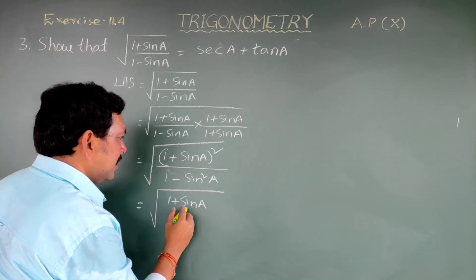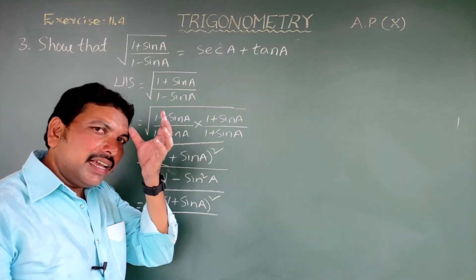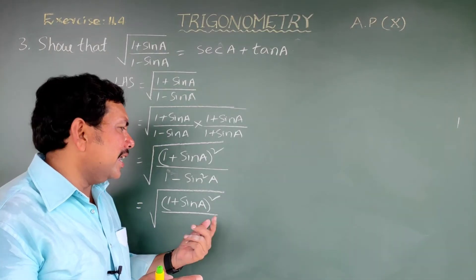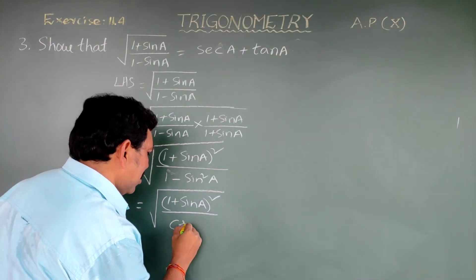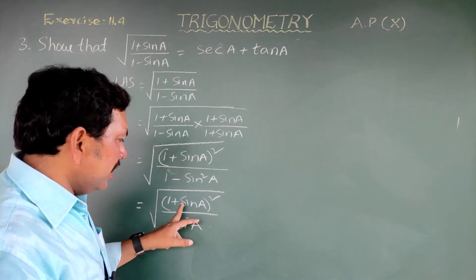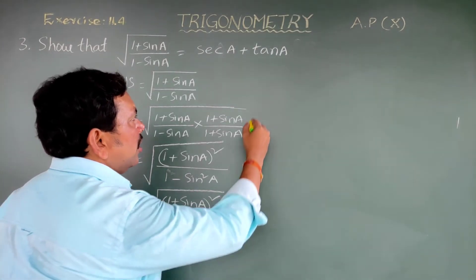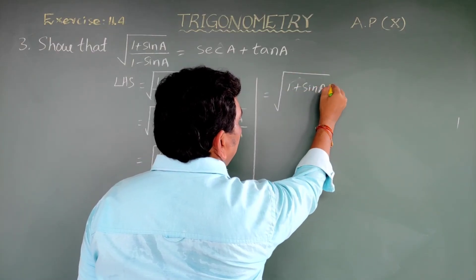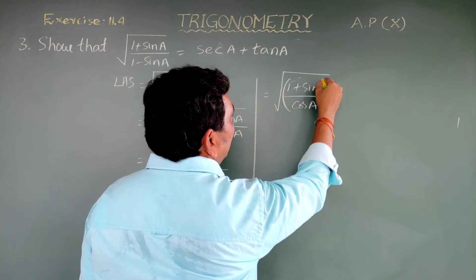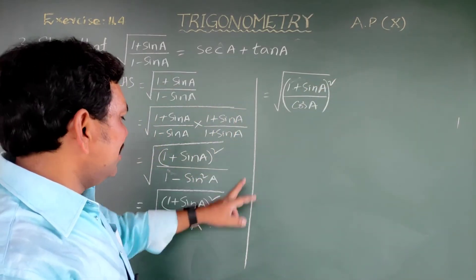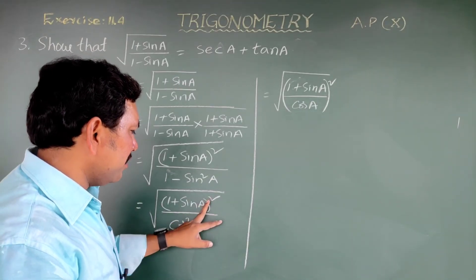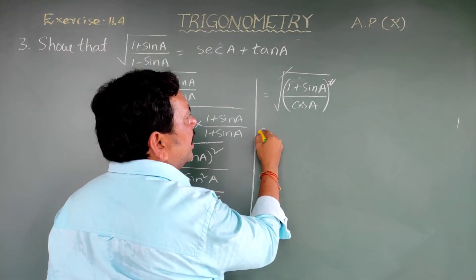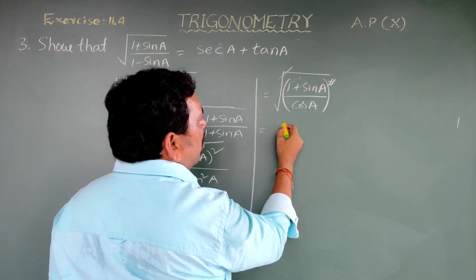So we have root of (1 + sin A)² divided by (1 - sin²A). Since 1 - sin²A equals cos²A, this is root of (1 + sin A)² divided by cos²A. Both numerator and denominator are perfect squares, so the square root gives (1 + sin A)/cos A.